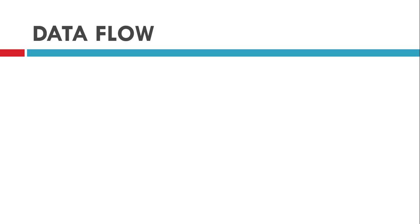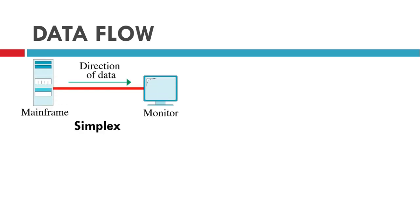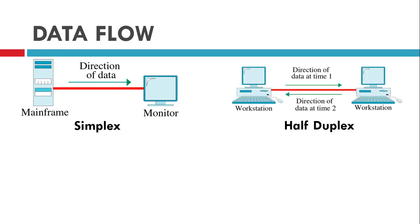Moving to the next point: data flow. Data flow is the direction in which data is transmitted. Basically, there are three types of data flow. The first is simplex, or one-way direction — the sender transmits the data and the receiver can only receive; the receiver cannot transmit data back. The best example of simplex communication is typing a message using your keyboard and having it displayed on the monitor — the monitor can only receive data and cannot transmit back to the keyboard. The next is half duplex — in half duplex communication, both devices can transmit, but only one can transmit at a time; when one is transmitting, the other can only receive.